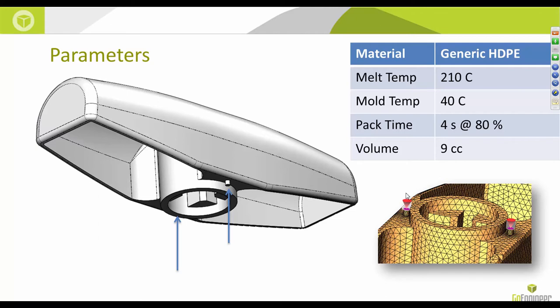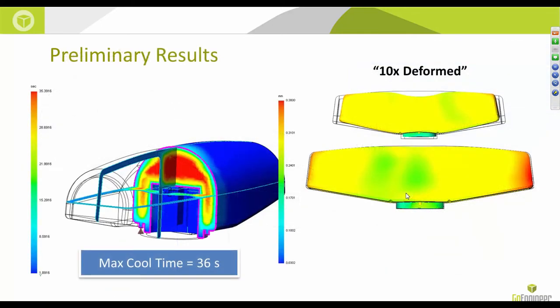The material parameters: it's a generic high-density polyethylene with a melt temperature of 210°C and mold temperature of 40°C. It was packed for about four seconds at 80% of maximum injection pressure. The volume of the part is about 9 cc's. The max cooling time is about 35 seconds — you can see the surface cools in about 1 to 8 seconds, while cross-sections reveal large wall thicknesses that take the longest to cool.